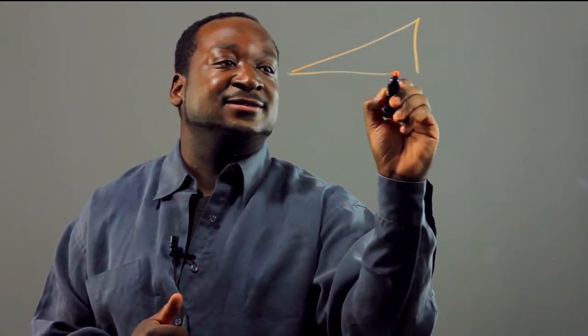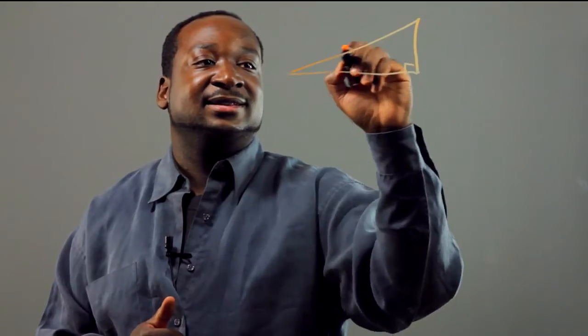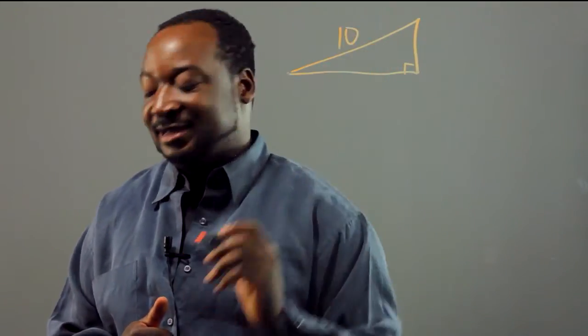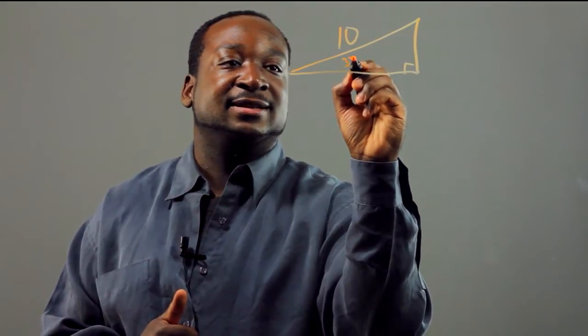Hi, my name is Stefan. I'm a math professional and today I'm going to be speaking on how to find the lengths of triangles using the interior angles. Let's start with a triangle here — a right triangle. Let's say we know the length of the hypotenuse which is 10 and we're given the angle 37 degrees.